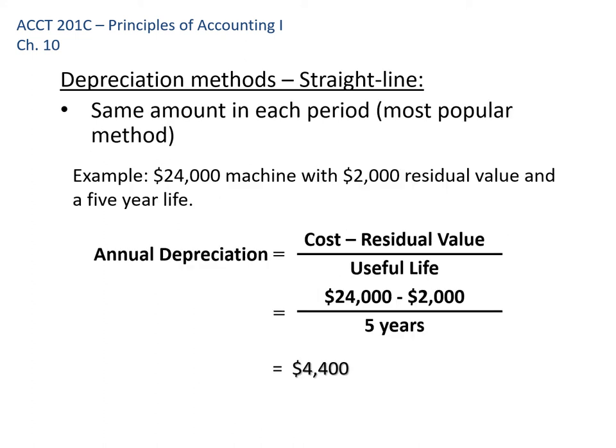The first and by far the most popular method is straight-line depreciation. You take the cost of the asset minus residual value, divided by useful life. In this example: a $24,000 machine minus a $2,000 scrap value, divided by five years, gives $4,400 per year in equal amounts. The journal entry each year would be to debit depreciation expense and credit accumulated depreciation for $4,400, repeated five years in a row.